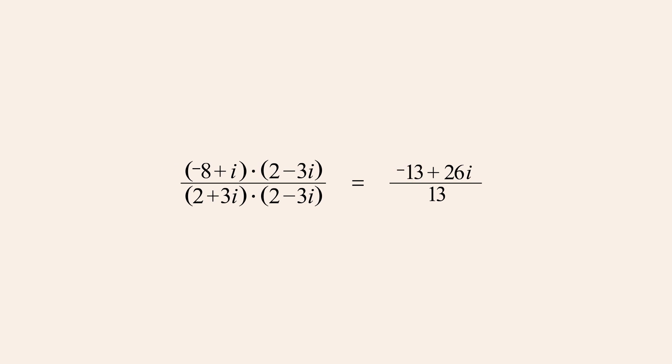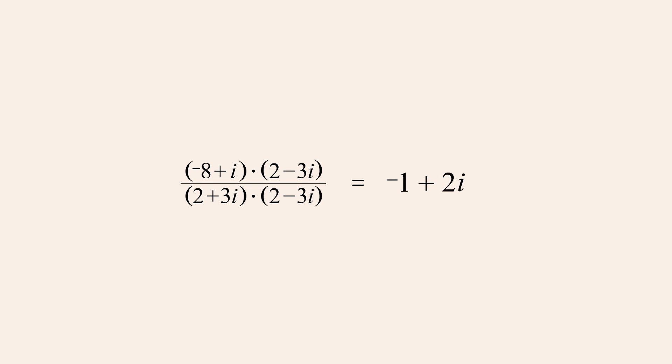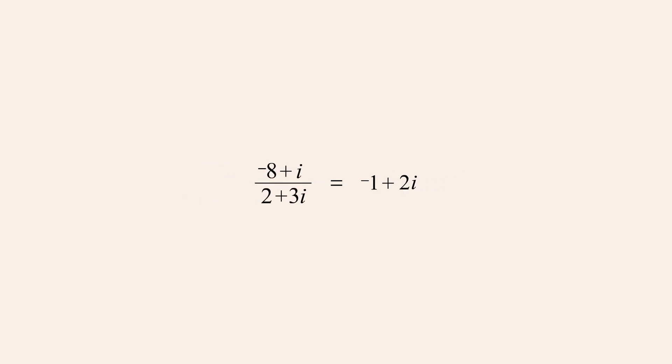So the numerator of our result is negative thirteen plus twenty-six i. Now that we have produced an equivalent fraction whose denominator is a real number, it is easily separated into the sum of a real fraction and an imaginary fraction. Simplifying the fractions, negative thirteen thirteenths is negative one, and twenty-six thirteenths is two. So negative eight plus i divided by two plus three i is negative one plus two i.